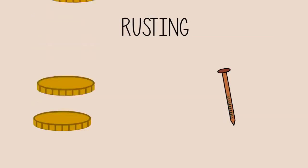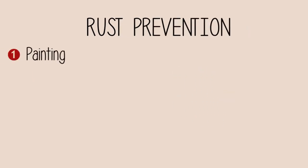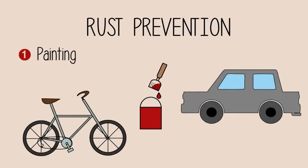Rusting can be very costly if we have to constantly replace these items made of iron and steel. Rust can be prevented if we paint the areas exposed to oxygen and moisture. This is done on many bicycles and cars.